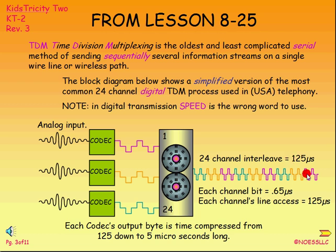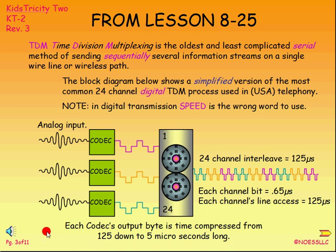I've only shown three but there are really 24 in this T-type carrier system. If I'm sampling 8,000 times per second, that means I'm doing it every 125 microseconds. Each of these 24 channels gains access to the transmission facility every 125 microseconds. I've got an 8-bit byte that's 125 microseconds long here, but I have to squish it down in time so that those 8 bits now occur in about 5 microseconds rather than 125 microseconds — shorter duration on-off pulses. Let's move on to look at a little more detail on the codec.